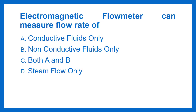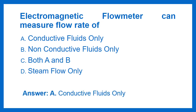Electromagnetic flow meter can measure flow rate of: Option A - Conductive fluids only, Option B - Non-conductive fluids only, Option C - Both A and B, Option D - Steam flow only. The answer is Option A: Conductive fluids only.